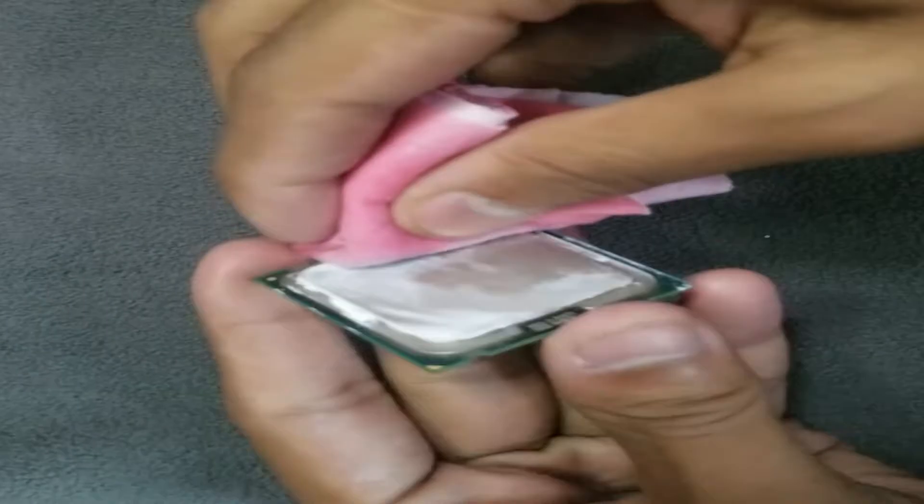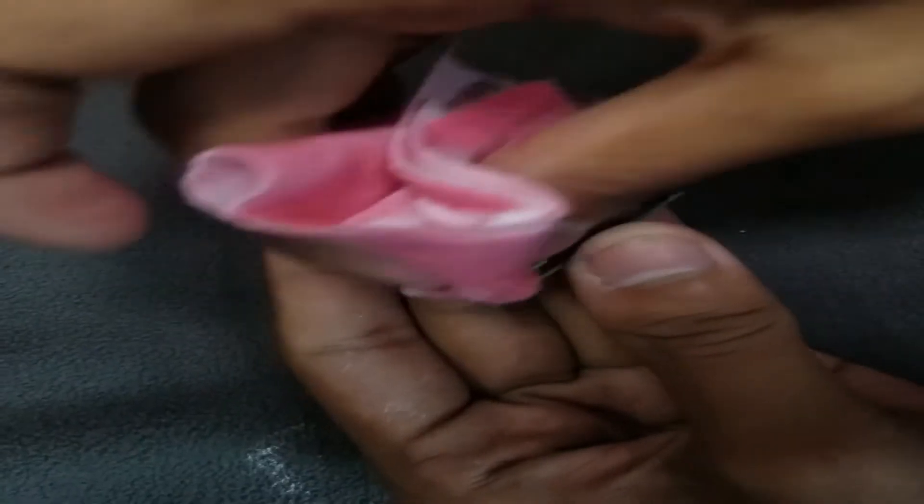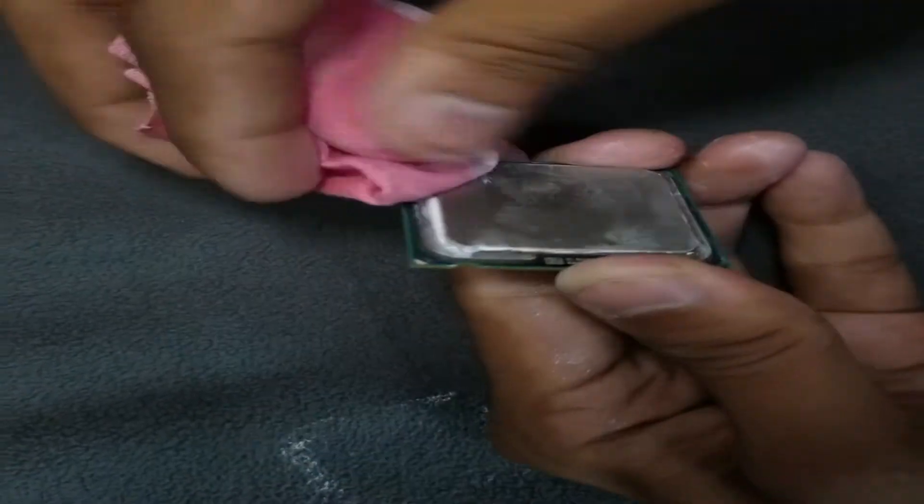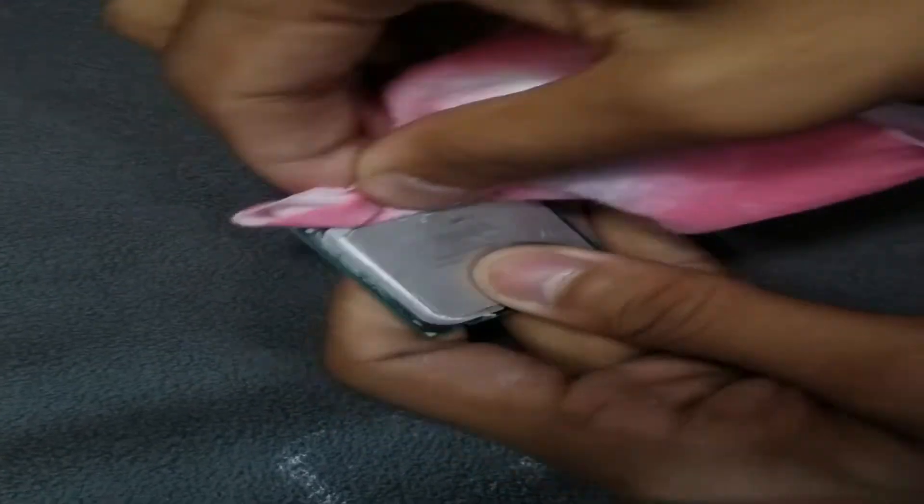Slowly rub and wipe the surface and take out all the dried grease. If needed, pour more remover on the cloth and see the magic within seconds. Don't apply too much pressure on the surface, otherwise you will damage the pins.